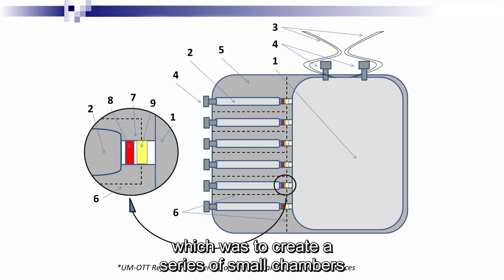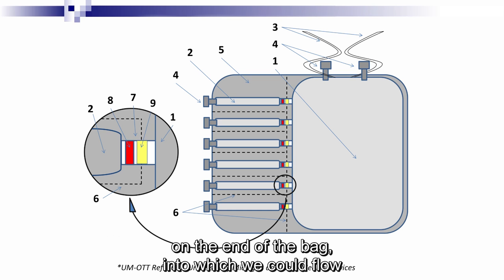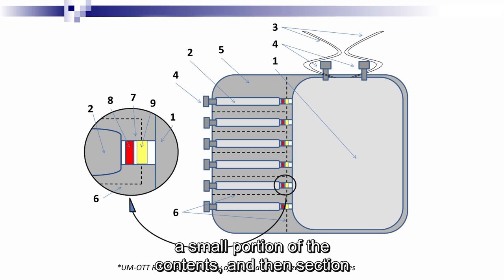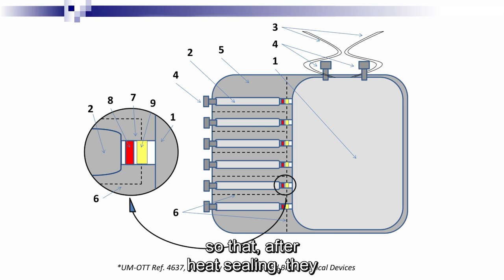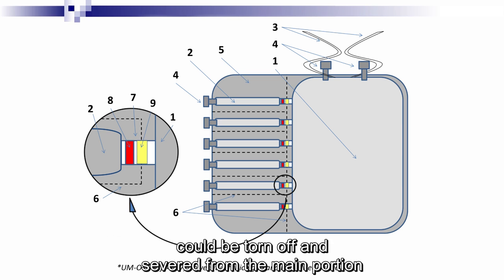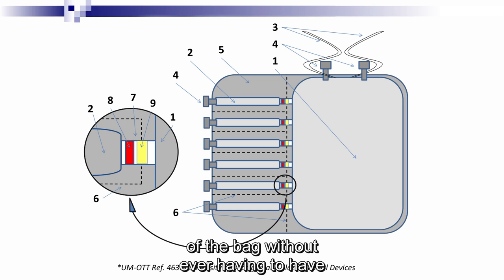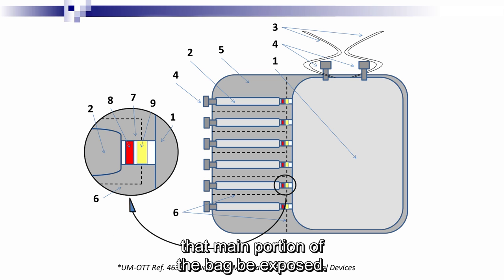create a series of small chambers on the end of the bag into which we could flow a small portion of the contents, and then section off those small chambers on demand with heat sealing, and then they would be perforated so that after heat sealing, they could be torn off and severed from the main portion of the bag without ever having to have that main portion of the bag be exposed.